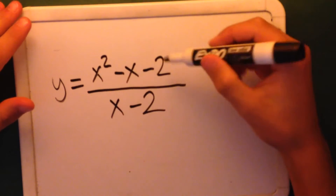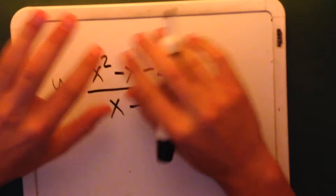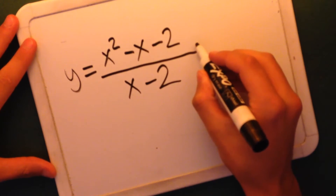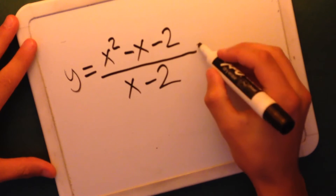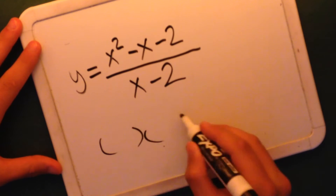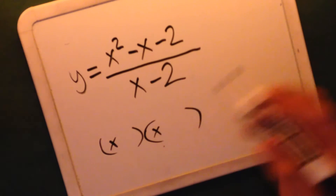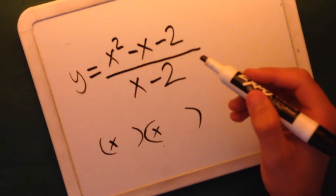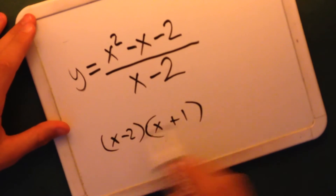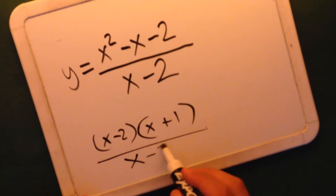First, with this function, we're just going to factor this out and separate it. So x squared on the bottom — x squared minus x minus 2 is going to be factored with x here and x here. What two numbers multiply to negative 2 and add to negative 1? It's going to be negative 2 and plus 1. So we have (x minus 2)(x plus 1) over (x minus 2).